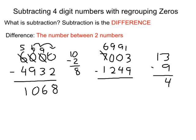13 minus 9 is 4. And we have our 4. 9 minus 4 is 5. 9 minus 2 is 7. And 6 minus 1 is 5. So we have 5,754.